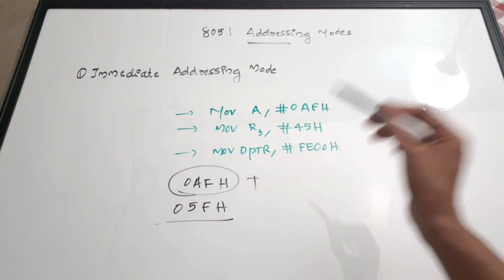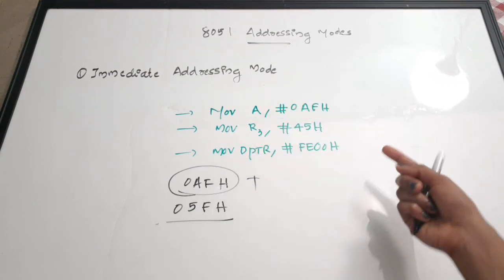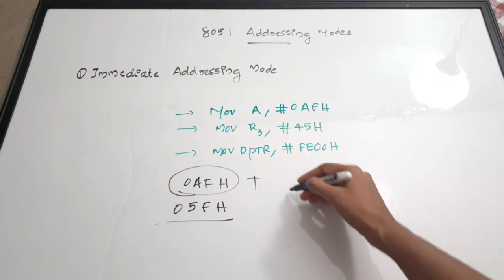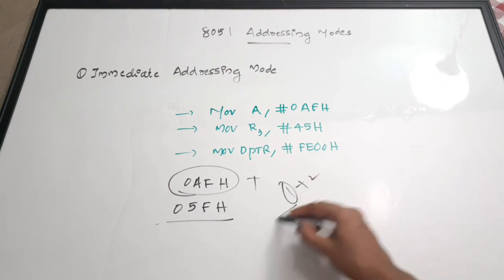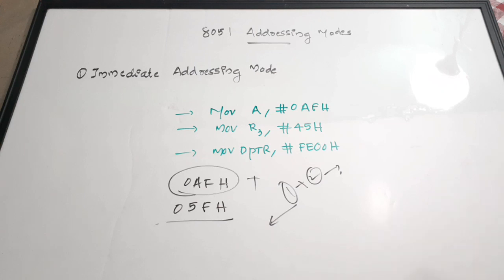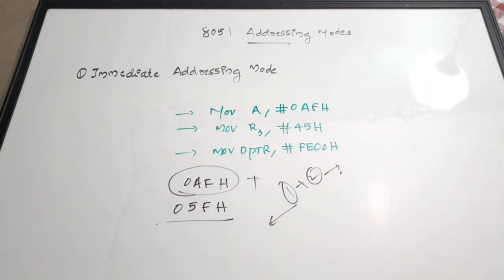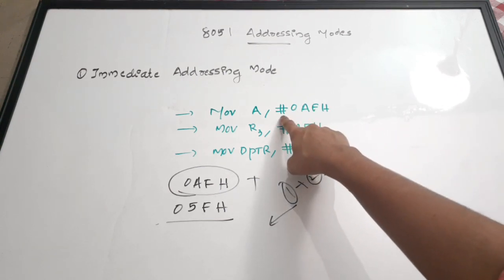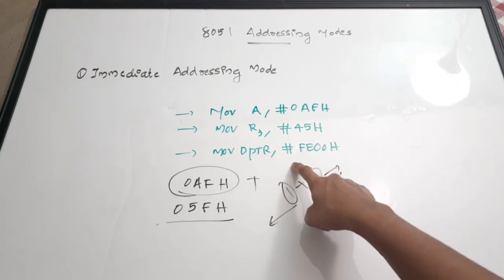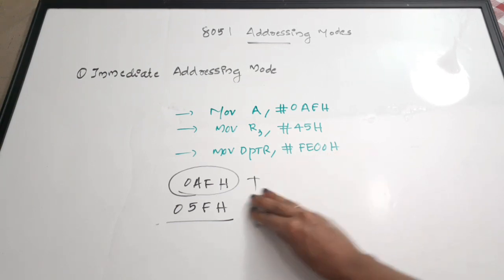The hash symbol indicates that the value is data, not an address. This data is directly given in the instruction. For example, if you want to add 1 and 2, you give each value with the instruction rather than fetching it from registers or memory. If you are passing an immediate data it must have a hash along with it — only then it will be considered as data, otherwise it will be taken as an address location.